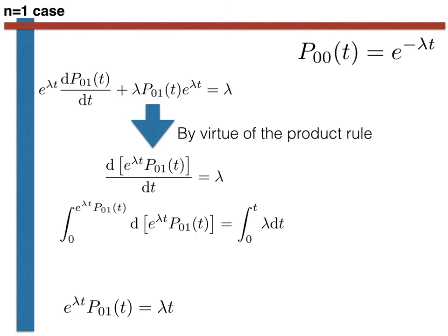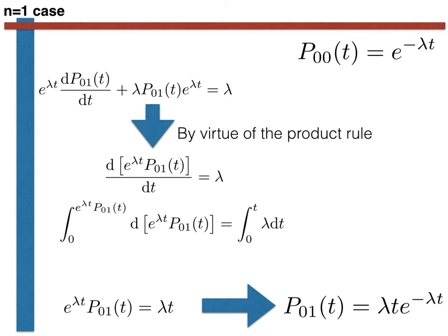To finish, we multiply both sides by e to the minus lambda t in order to move the final term in t from the left-hand side to the right-hand side. We thus find that the final result is p01(t) equals lambda t multiplied by e to the minus lambda t.